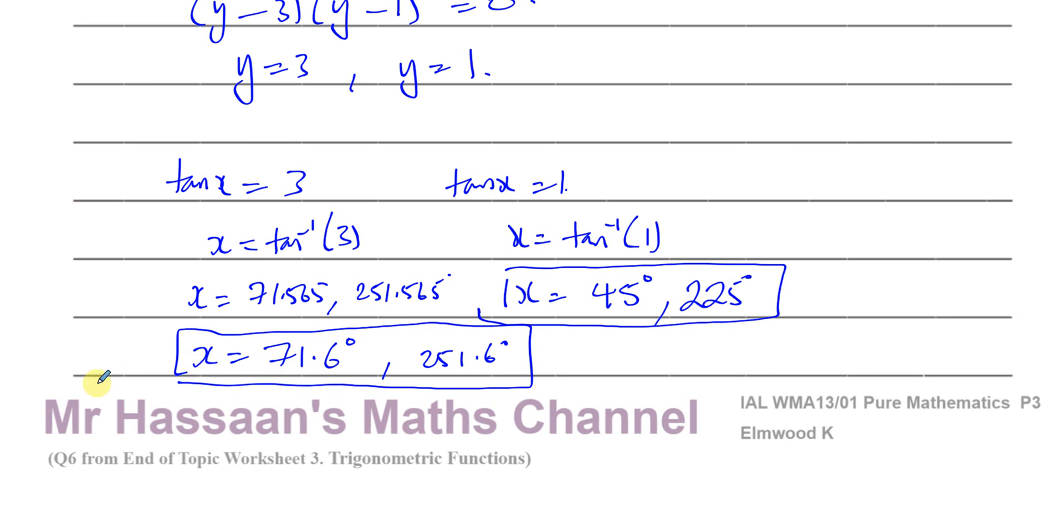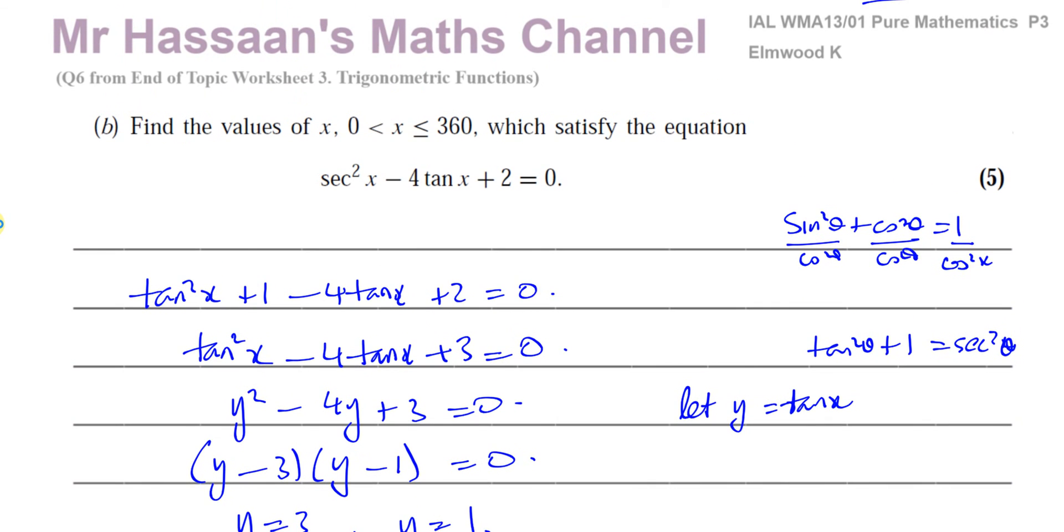So those are all the solutions within our range. Remember with tan, the principal solution, you add 180 to it to get the other angles, and you subtract 180s from it. So the multiples of 180 above it and the multiples of 180 below it will give you all the values that share the same tan ratio. So we got all the angles in our range, which is between 0 and 360, and we got the answers for this question.